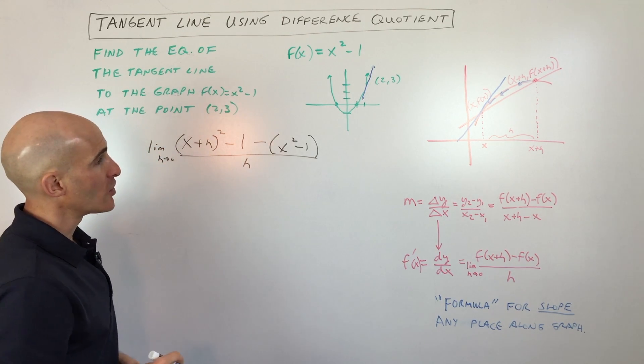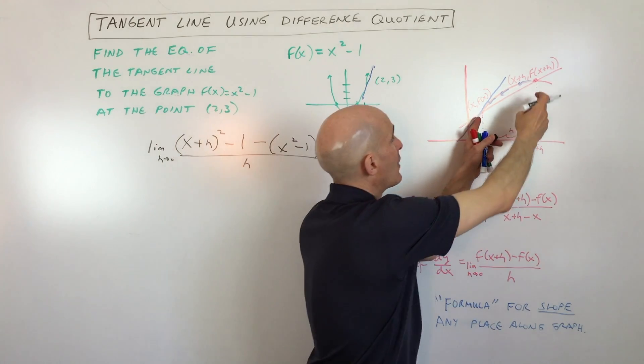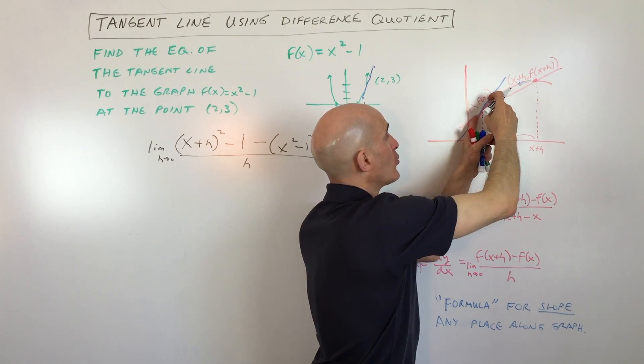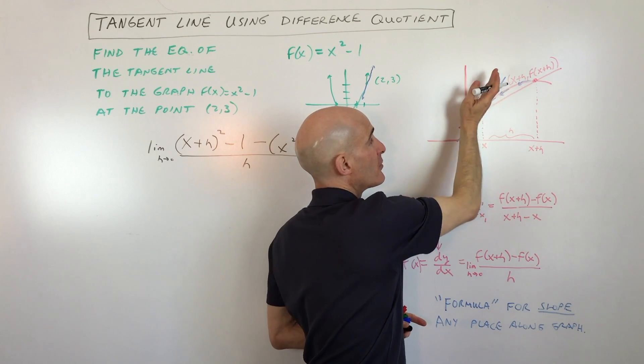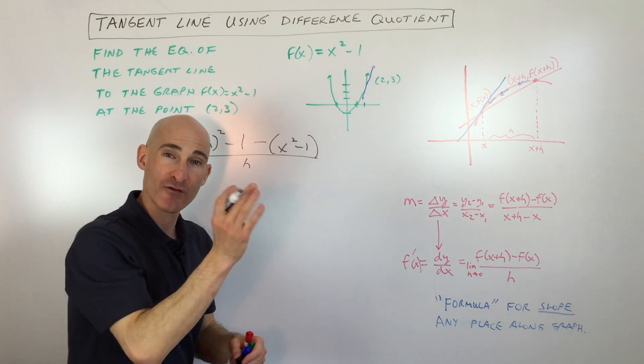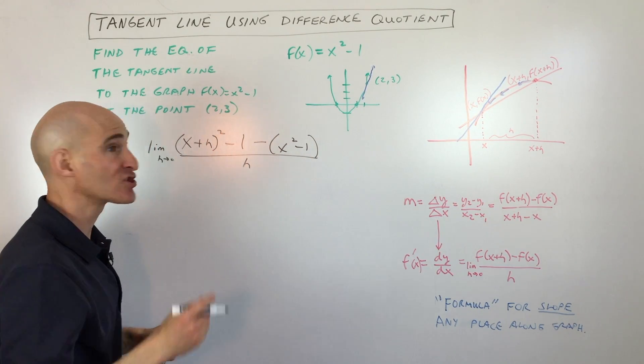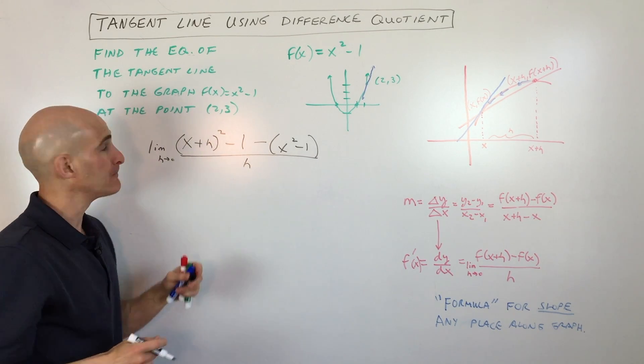So you probably saw this in the previous video how these points become closer and closer together until they coincide at that same point, you're finding that instantaneous rate of change. You can check out that video if you want to learn more about that.